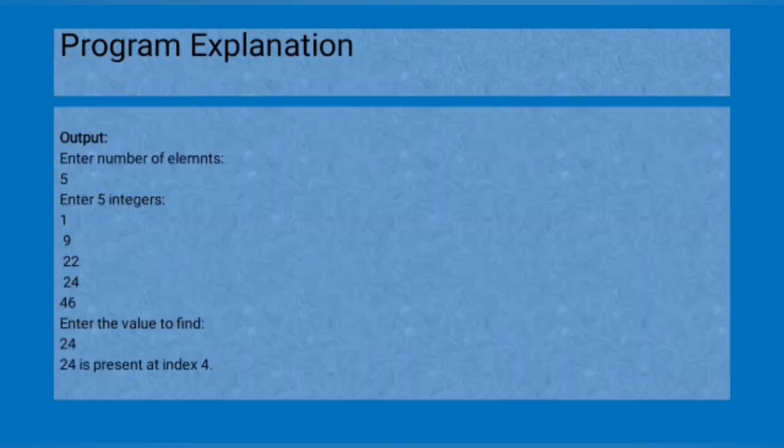The output is enter how many elements you want. We have taken five elements and the indices we given are 1, 9, 22, 24, and 46. The value I want to find is 24. Then in this program, 24 is found at index 4.